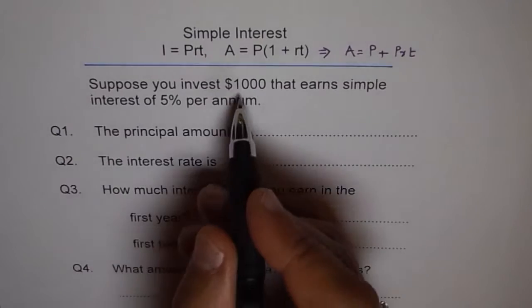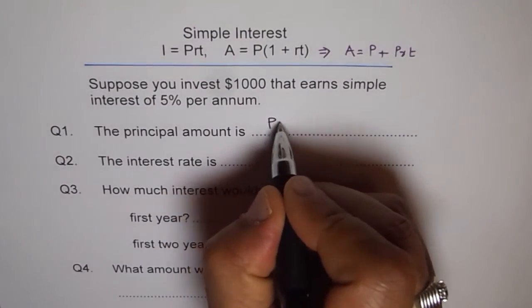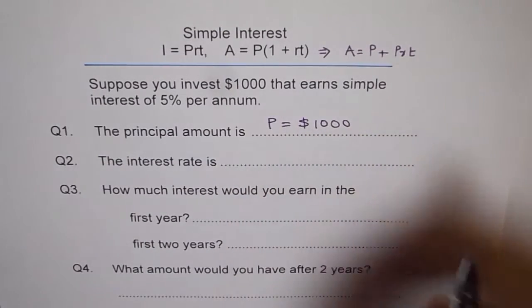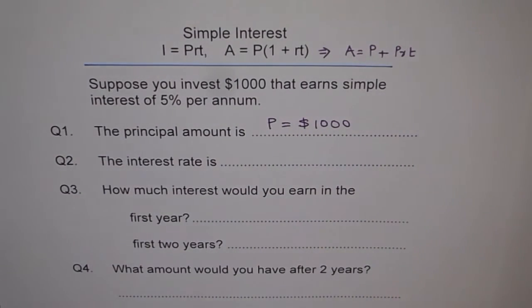Principal amount is $1000, the amount invested, so we will write P equals $1000. Remember that, whatever you invest is your principal amount.